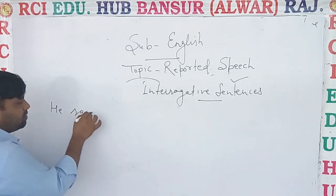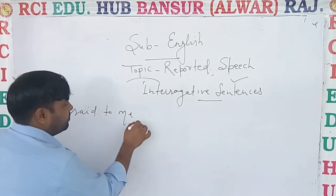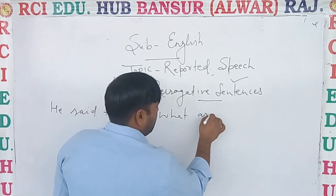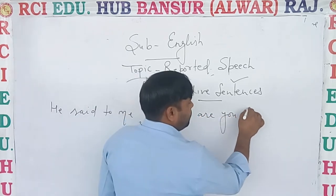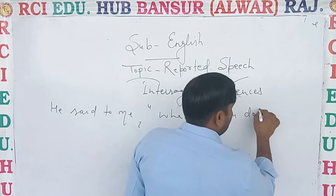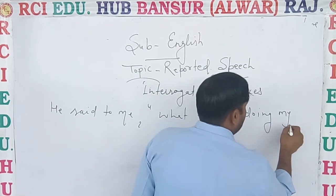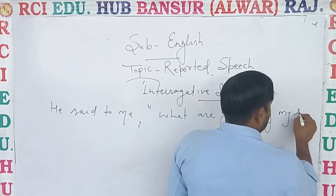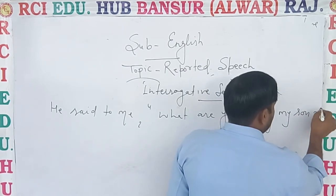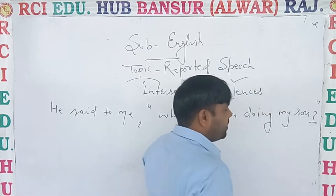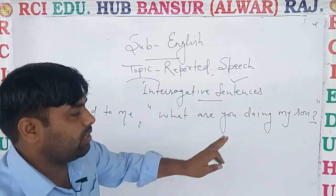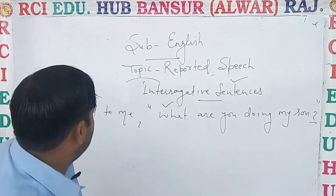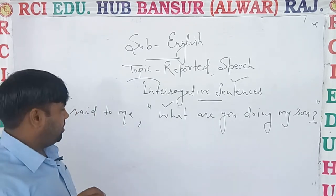I am just giving one example. 'What are you doing?' — there is a sign of interrogation, and a WH word is there. You can easily understand it is an interrogative sentence.